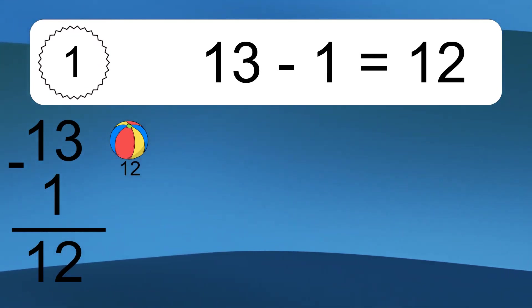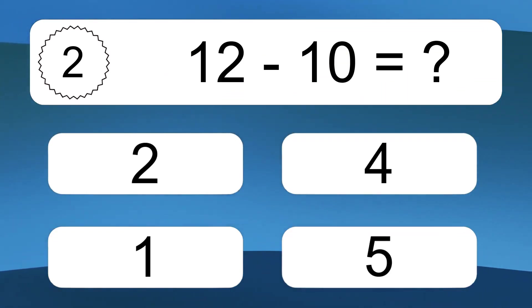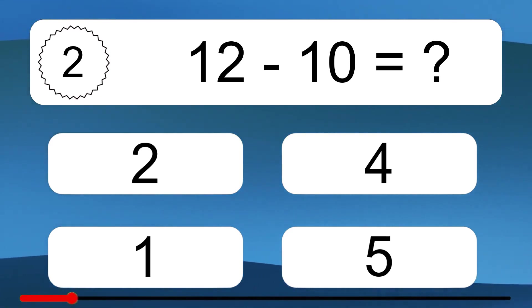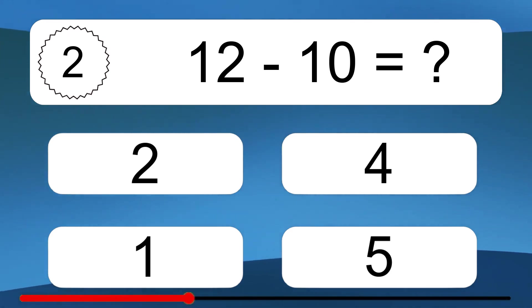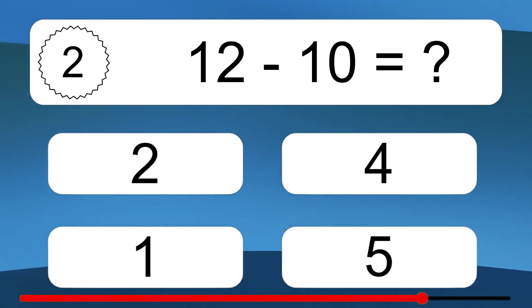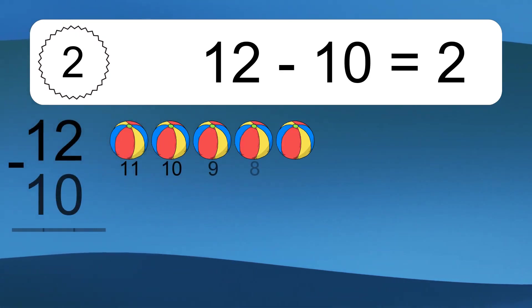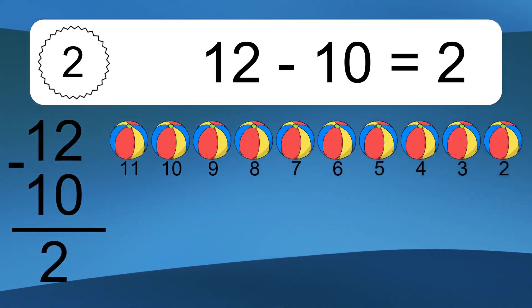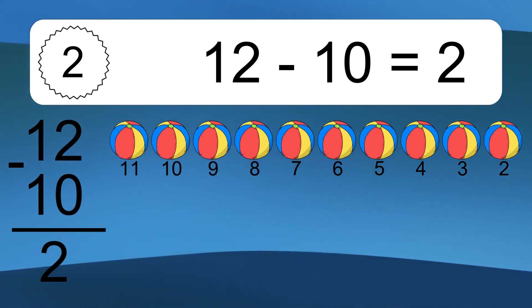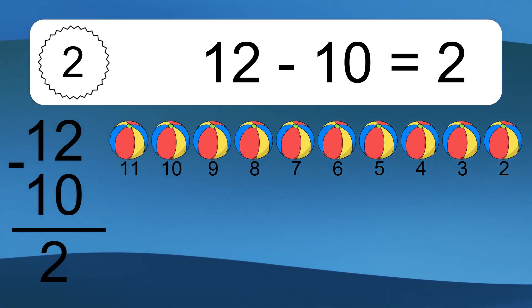12 minus 10 equals what? 12 minus 10 equals 2. Let's count it: 11, 10, 9, 8, 7, 6, 5, 4, 3, 2.